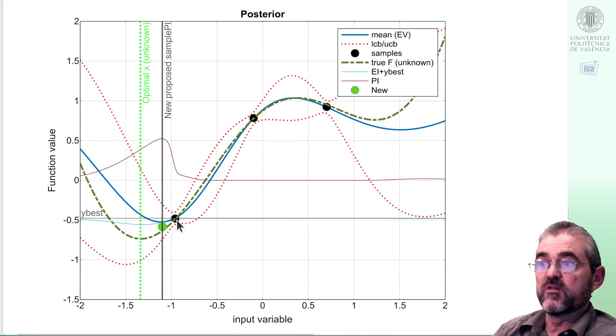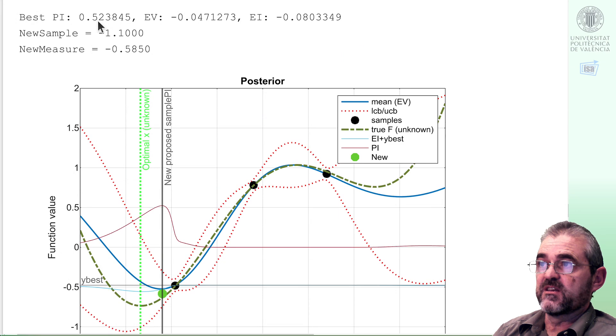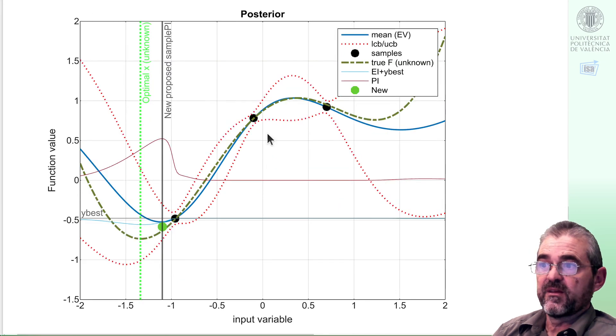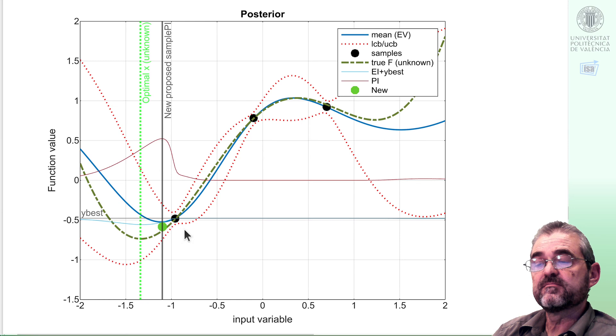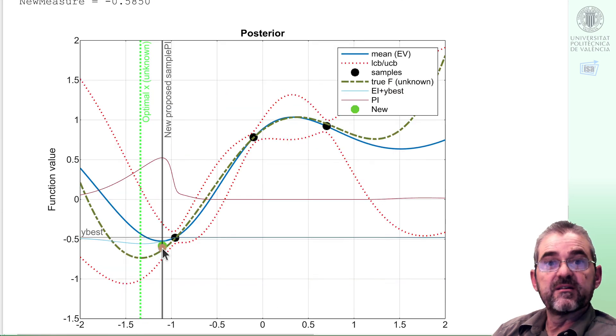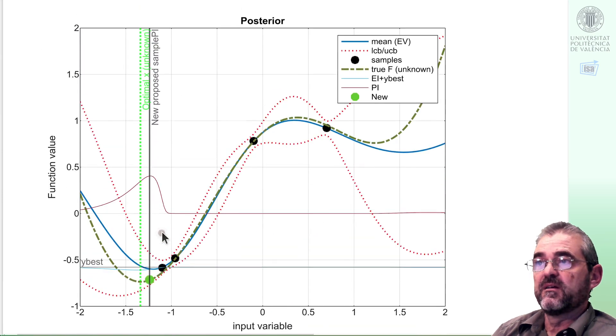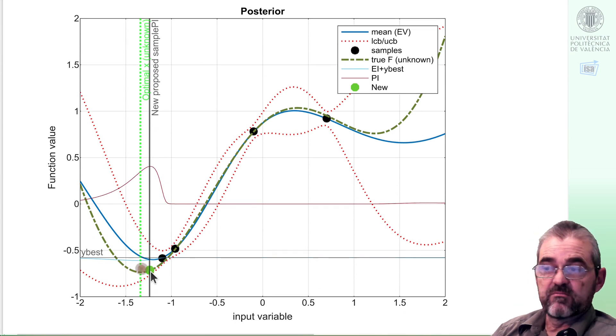If I add that one then the new probability of improvement is 52%. The point with maximum probability of improvement is here with this new posterior so we sample it. Then this green gets converted to black past samples and then the probability of improvement tells me to go here. We are now in a sort of gradient descent phase, we sample there.